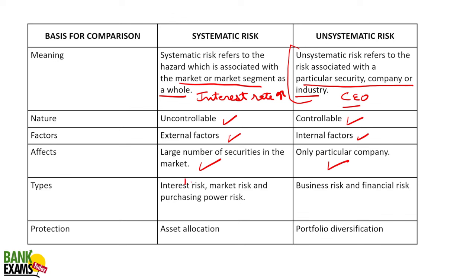Types of systematic risk include interest rate risk, market risk, and purchasing power risk of the currency. If the currency value changes, you can't do anything about it. While in case of unsystematic risk, there are business and financial risks — a lot of risks can exist for a specific company.